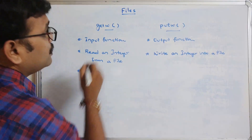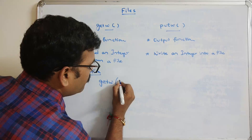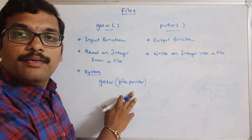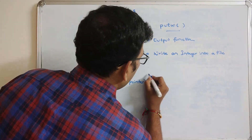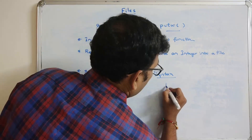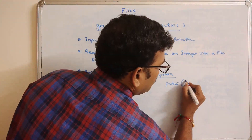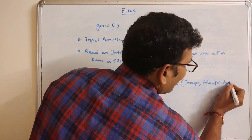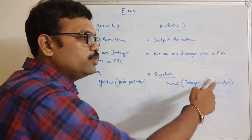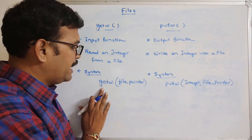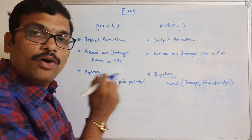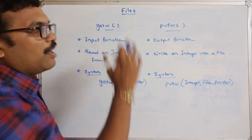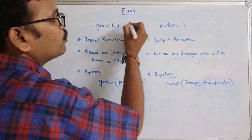The syntax for getw is: getw(file_pointer). From this file pointer we'll get the integer value from a file. For putw, the syntax is: putw(integer, file_pointer). It will write that particular integer into the file associated with that file pointer. getw retrieves or reads the integer from the file associated with the file pointer. These are the input and output functions to read and write integers only.